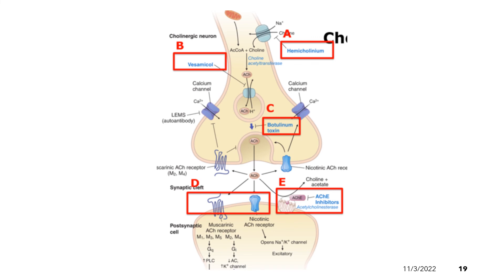Another drug, represented by letter B, is vesamichol. It inhibits the transport of acetylcholine into the synaptic vesicle. Within the axon terminal, the synaptic vesicle's main function is to store acetylcholine in order to protect it from acetylcholinesterase. Vesamichol inhibits the transport of acetylcholine from the cytoplasm to the synaptic vesicle, thereby inhibiting the formation and release of acetylcholine into the synaptic cleft.